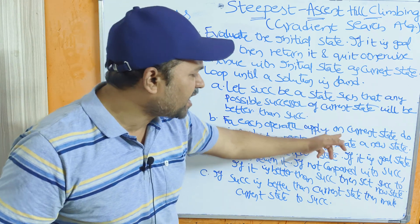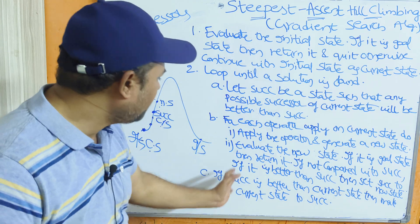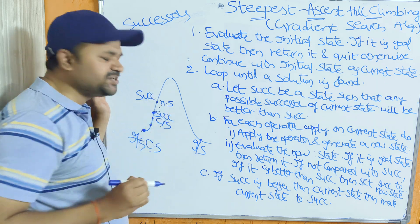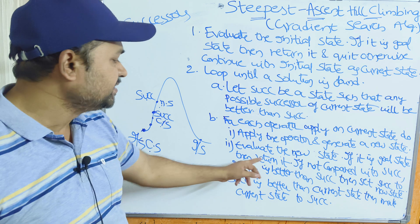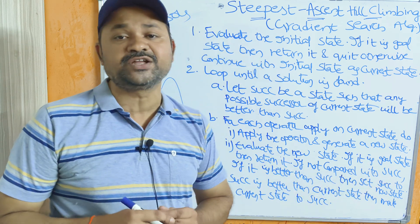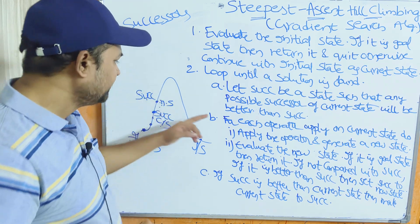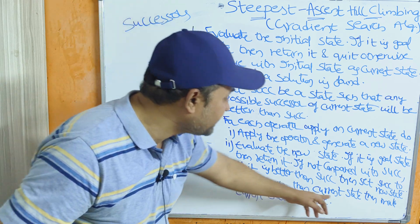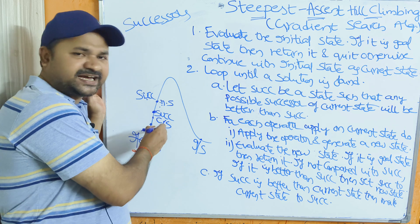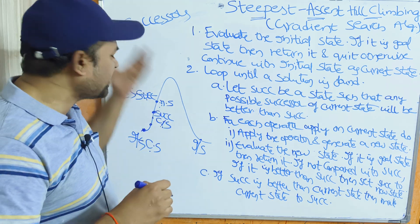For each operator applied on the current state: apply the operator and generate a new state. Evaluate the new state — if it is a goal state, return it; if not, compare it with the successor. If it is better than the successor, then set the successor to the new state. Next, check if the successor is better than the current state; if so, make the current state equal to the successor.